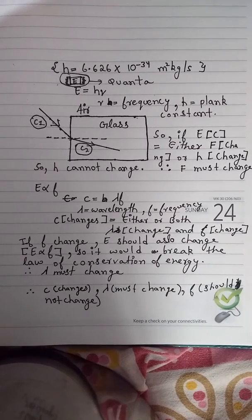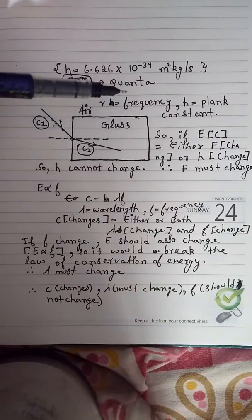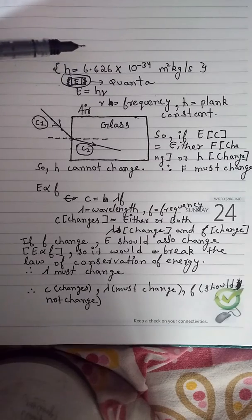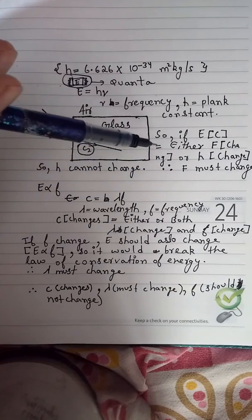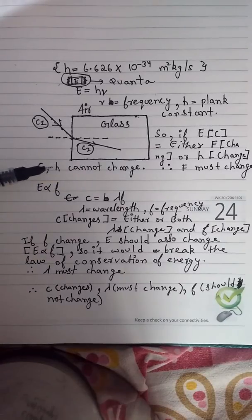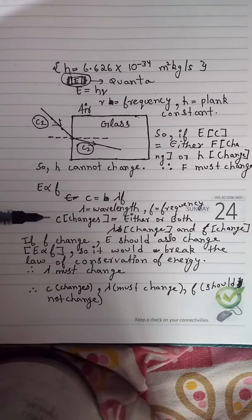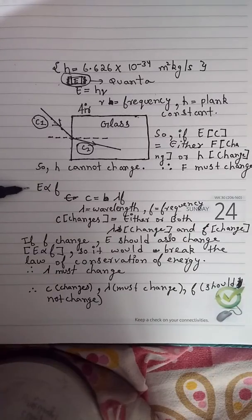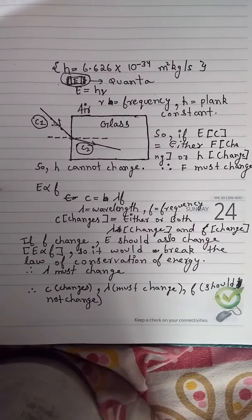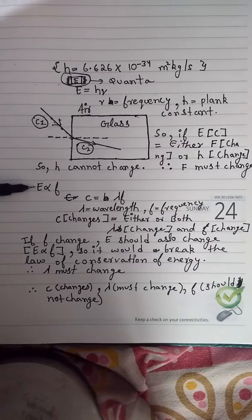Let's take an example that a certain amount of energy is increased. As the energy is increased, either Planck constant or frequency should change. We know that the Planck constant is a constant, so it does not change. So the frequency must change in order to balance the change of energy. We can write that E is directly proportional to F. If the energy increases, the frequency also increases. And if the energy decreases, frequency also decreases.